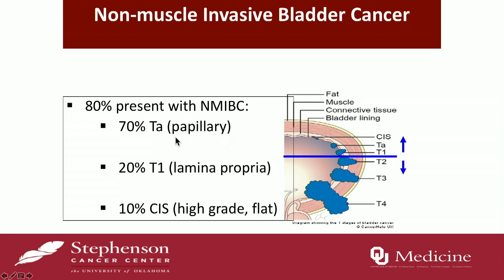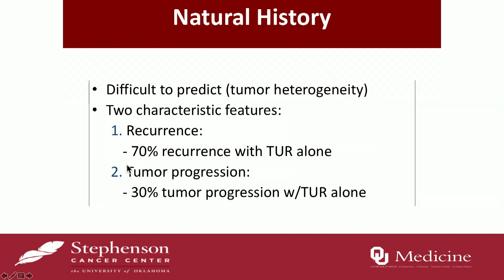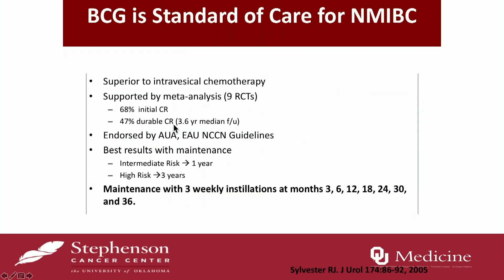Starting with the natural history of non-muscle invasive bladder cancer: about 75 to 80 percent of patients present with non-muscle invasive disease. The majority are papillary, with a mix of T1 and CIS. The natural history is very heterogeneous and hard to predict, but we know two characteristic things — these tumors can recur and they can progress. The recurrence rate can be as high as 70 percent with TUR alone.